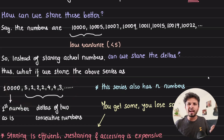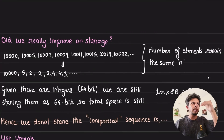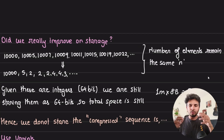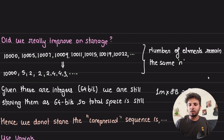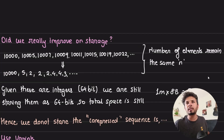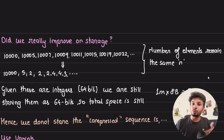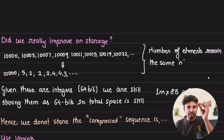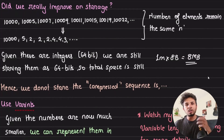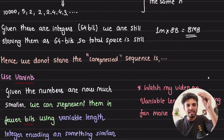Are we really gaining something? The original series has N numbers and the delta series also has N numbers. If we store those delta numbers as 8-byte integers, we're not really saving any space — it's still 1 million data points each being an integer, still 8 MB. So just doing delta encoding without changing the storage format doesn't help. What we need is to encode integers into variable-length integer encoding.